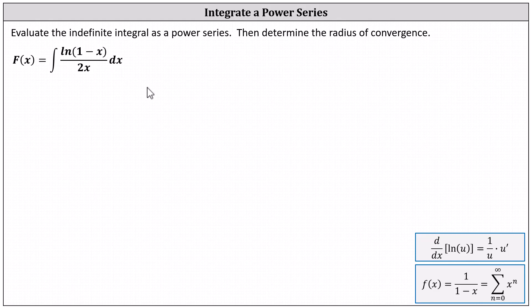To determine the power series for the integrand function, we'll first have to determine the power series for the numerator, natural log of the quantity 1 minus x. To do this, we need to recognize that the derivative of natural log of (1 minus x) will resemble the known geometric power series of 1 divided by (1 minus x), which equals the sum from n equals 0 to infinity of x to the power of n.